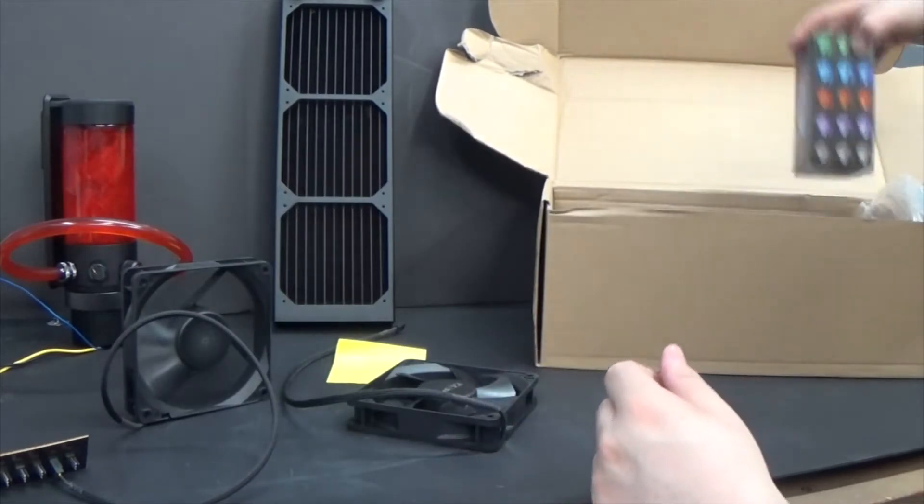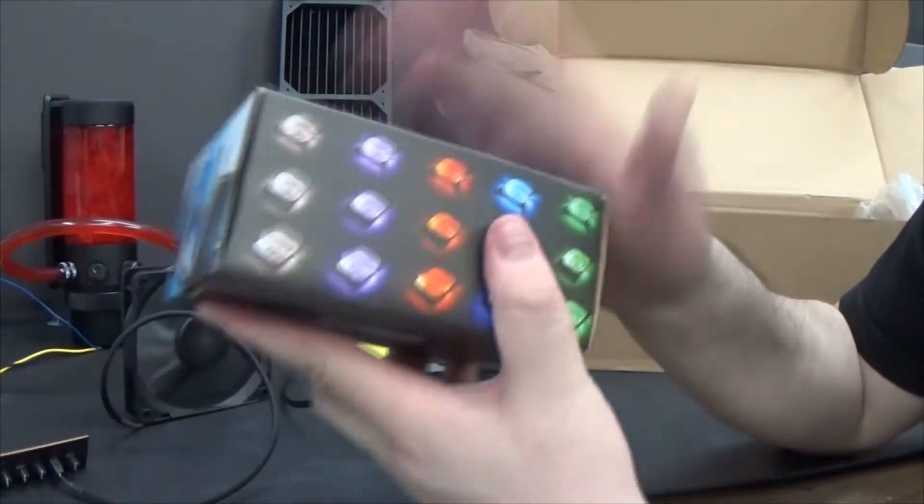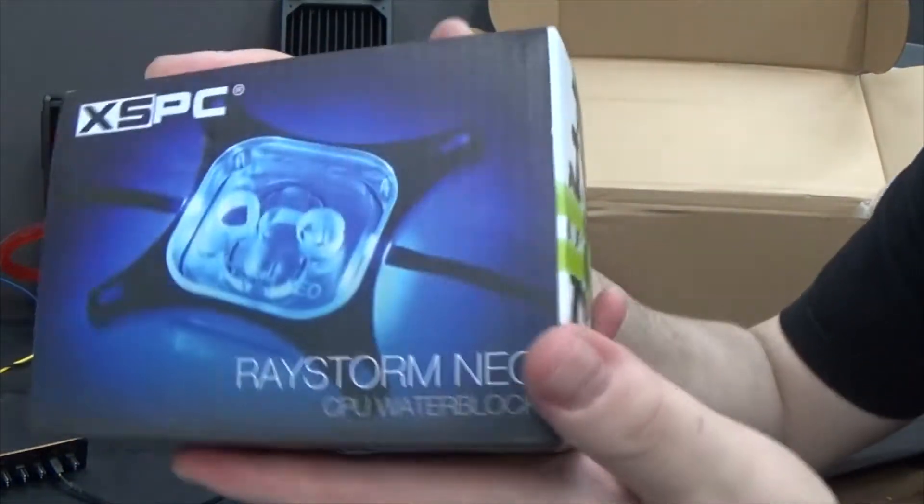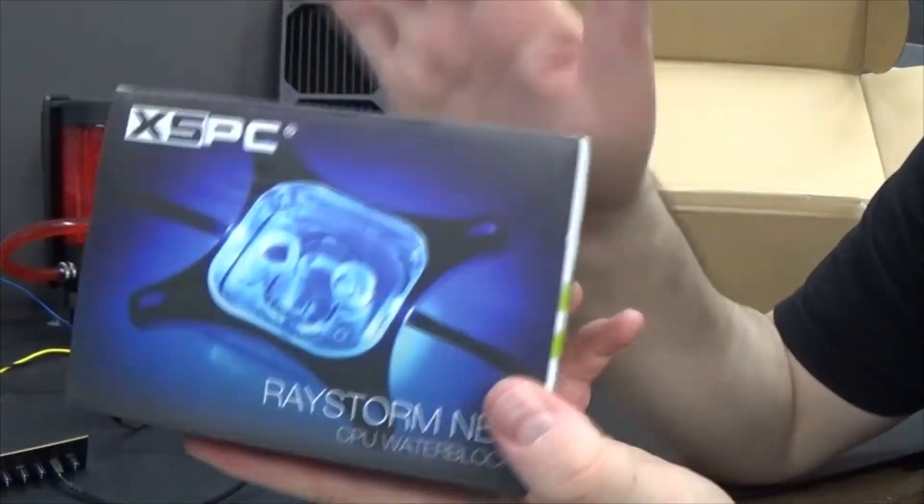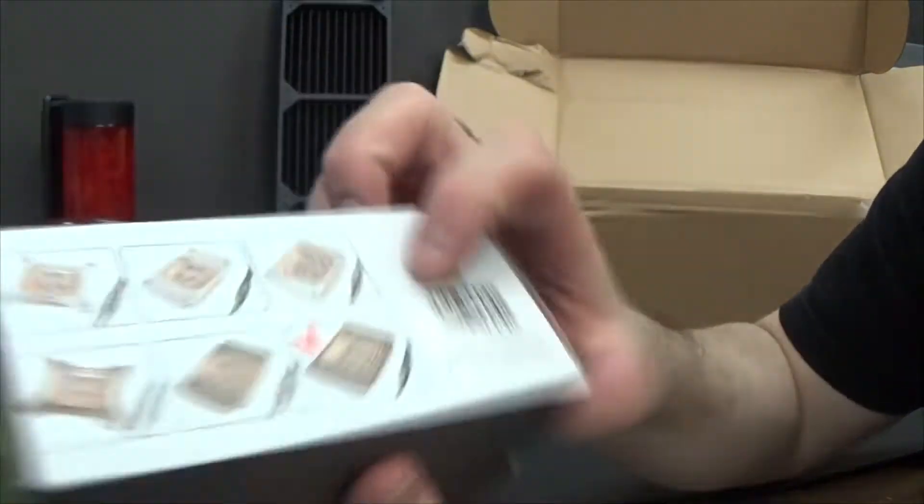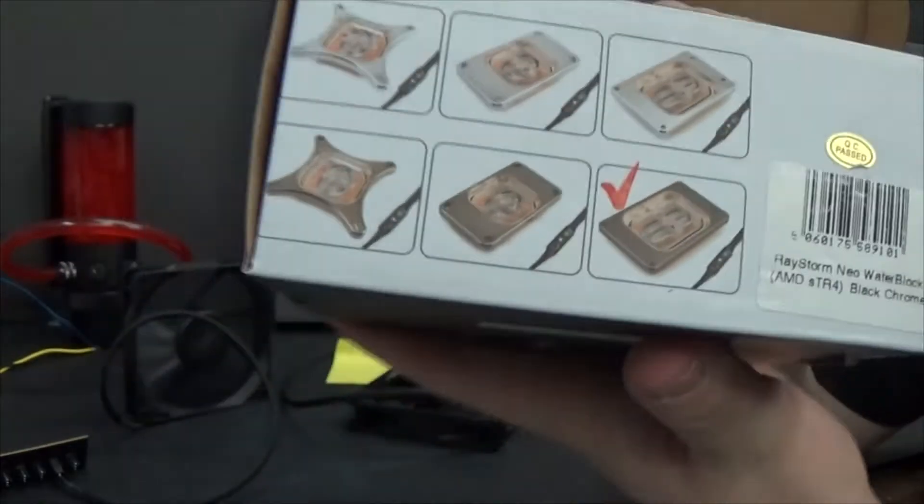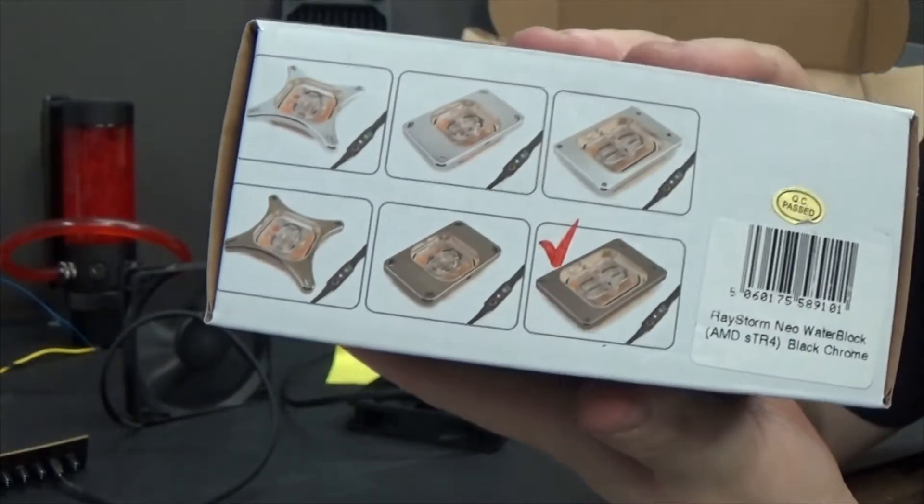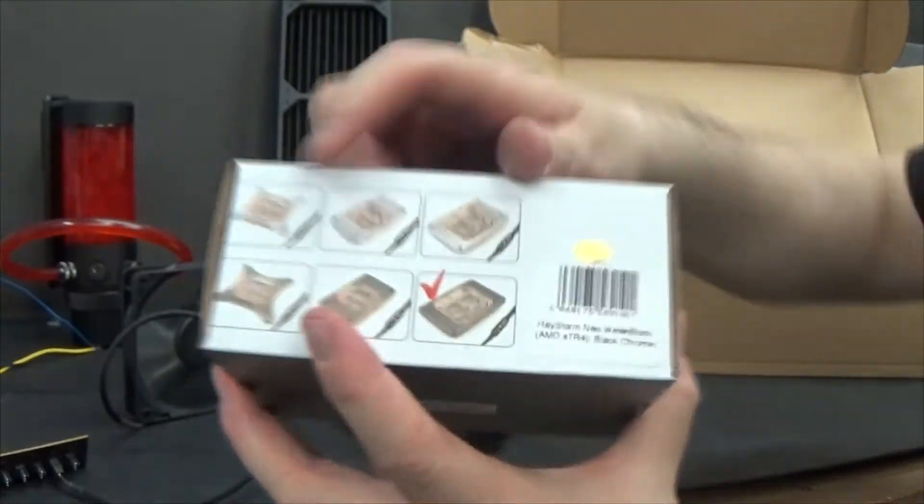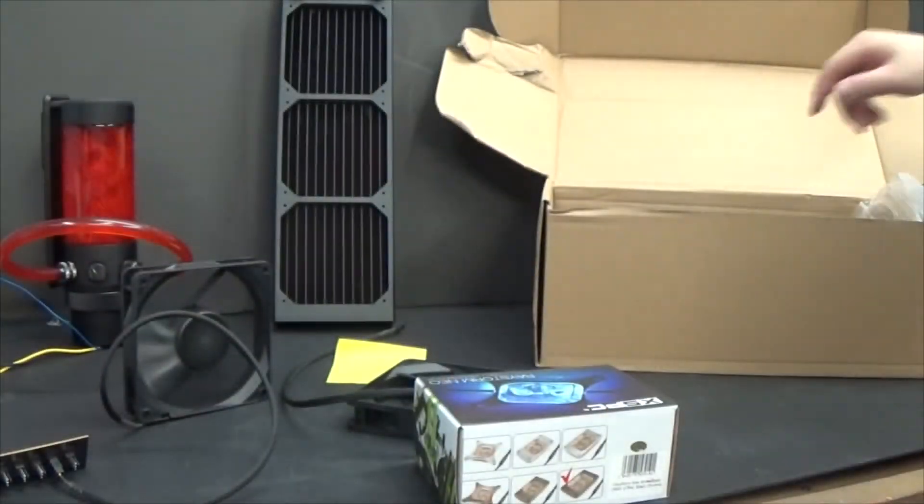So in here, straight up, you're getting your water block. Dun dun dun! It's Intel. Nope, just kidding. That's the picture they use. If you look on the back, it's got the AMD Threadripper block checked. So you get the block, it is the RGB block. You can even see the little RGB controller in there.